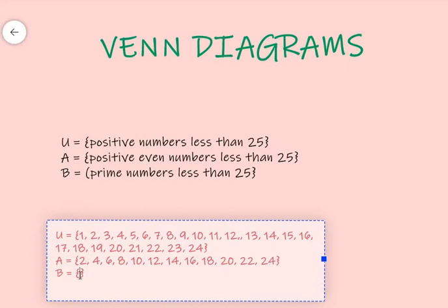And finally, set B represents prime numbers less than 25. And so, we're going to have, remember what are prime numbers? Prime numbers are numbers with only two factors, one and itself. Numbers with only two factors, one and itself. Alright. So, let's go.